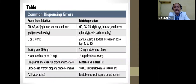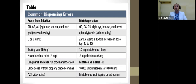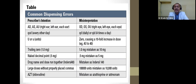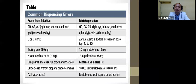In terms of dispensing errors, one common error is misinterpretation of abbreviations. Unfamiliarity with prescription abbreviations can result in dispensing errors. For example, 'U' meaning units may be misread as a zero, causing a tenfold increase in dose. Similarly, a trailing zero like '1.0 mg' could be mistaken as '10 mg,' which is a significantly different dose.